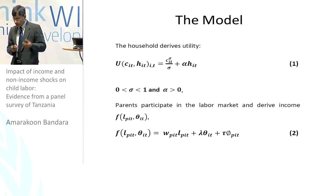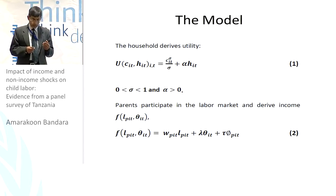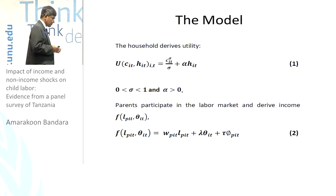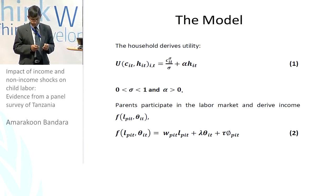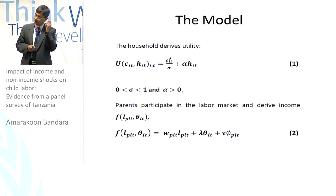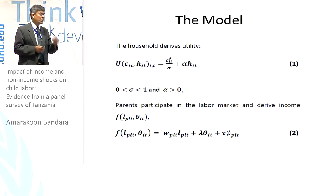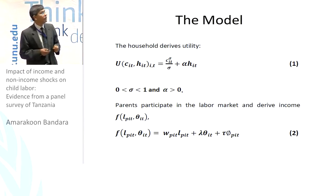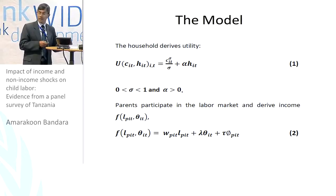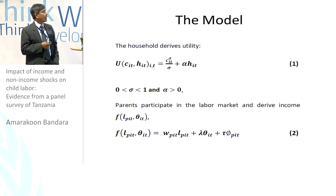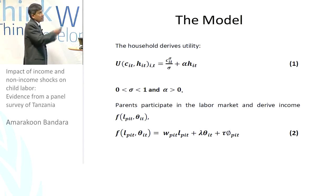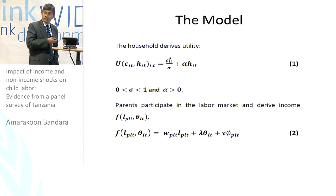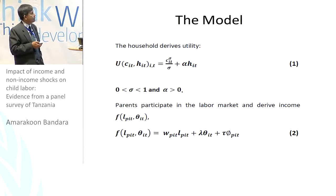The economy we are talking about is one where the parents make all the decisions, including sending the child to school or enabling him to join the labor market. In this particular model, there is one parent and one child. The parent decides on the child's human capital development — sending him to school or asking him to work. The household derives utility from a standard consumption-asset type utility function, modified to incorporate a human capital portion.